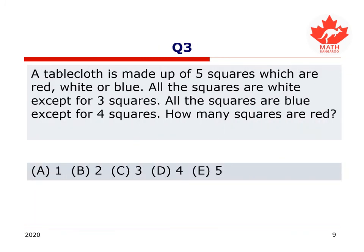Let's try another question. A tablecloth is made up of 5 squares which are red, white, or blue. All the squares are white except for 3 squares. All the squares are blue except for 4 squares. Tell me, how many squares are red? Is it 1, 2, 3, 4, or 5? Again, don't trust your brain if your brain is saying, oh, I know this, I will just listen to the solution. It'll be easy. No, please pause the video, select an answer, commit yourself to an answer, make sure you're sure about it, and then unpause the video and listen to the solution. That's the best way to learn mathematics, to try and do it yourself first.